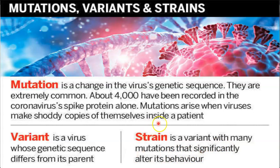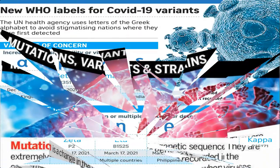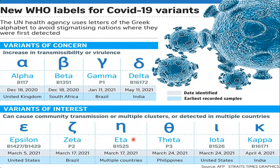Variant is a virus whose genetic sequence differs from its parent. When progeny viruses have a different genetic sequence, we call them variants of that parent virus. Strain is a variant with many mutations that significantly change the behavior of that particular virus.